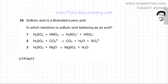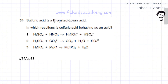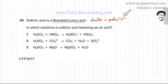The following question states that sulfuric acid is a Bronsted-Lowry acid. By definition, a Bronsted-Lowry acid is one that donates a proton — in other words, it donates an H⁺ ion. H⁺ ions are called protons because hydrogen only has one proton; this entire atom has one proton. Now, in which reaction is sulfuric acid behaving as an acid?